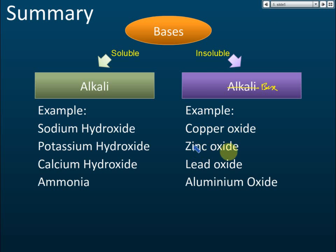Examples of bases that are not alkalis include copper oxide, zinc oxide, lead oxide, and aluminium oxide — these are bases.